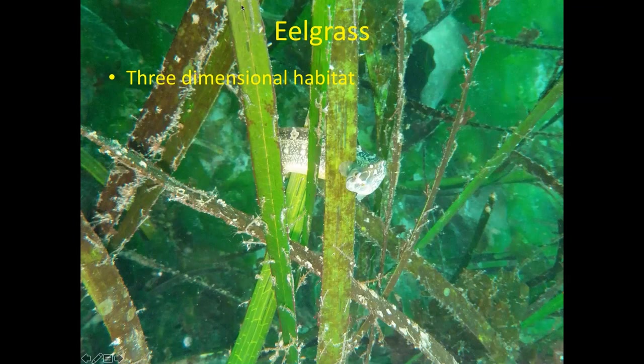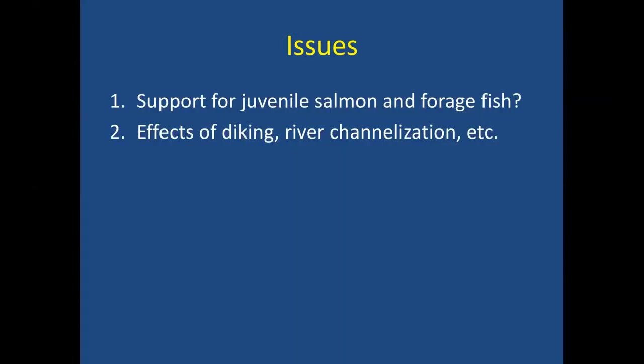You might be able to see the fish in this picture. The issues with the use of eelgrass: does the eelgrass provide for juvenile salmon as they're out-migrating through the estuary? There are also local forage fish species that use the habitats. When is it important, and in what settings? The second issue is that the river deltas have been modified a lot, especially with diking and river channelization to protect farmland from saltwater intrusion.